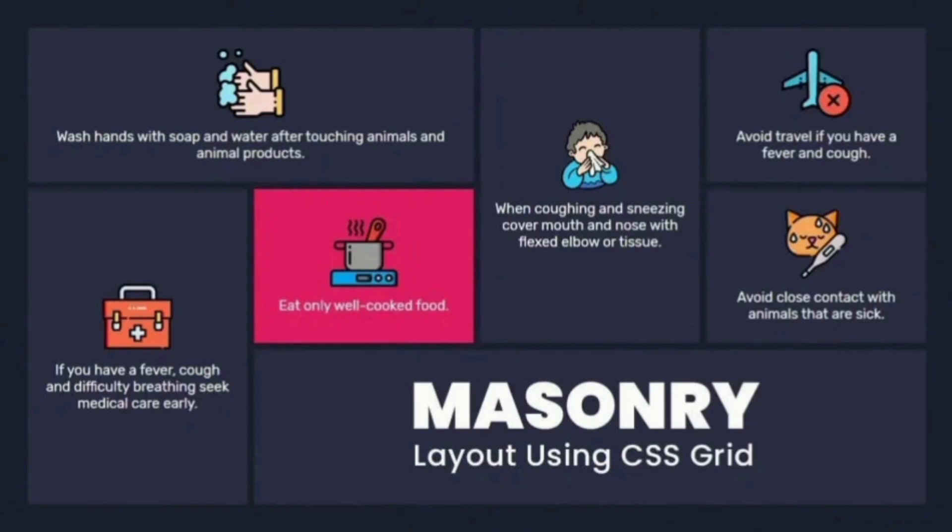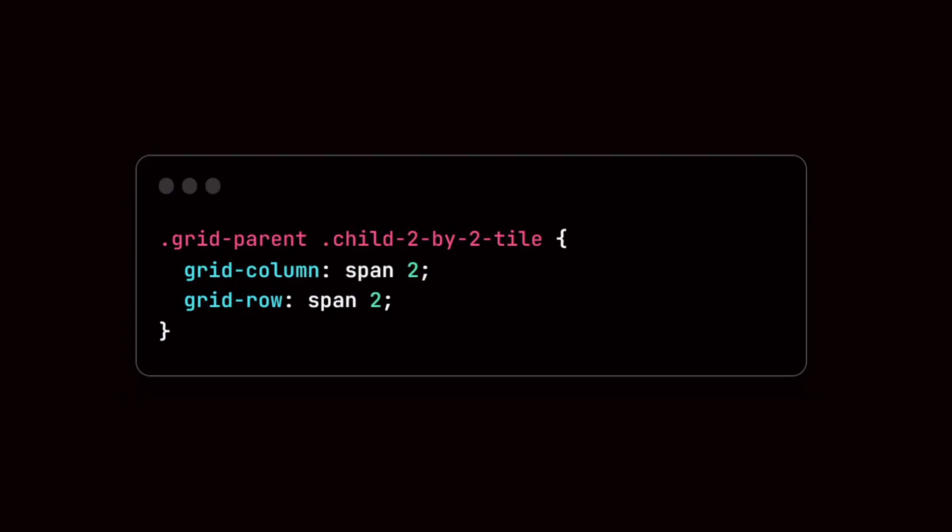Grid can be used to display items like cards where each element should have equal spacing. It can also be used to create masonry layouts where the items are laid out in a grid but the items expand beyond a single row or column, which can be done by adding a few CSS properties to the child elements.